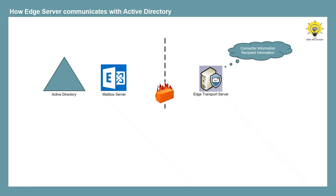For example, connector information for email flow and recipient information for anti-spam recipient lookup. This data from Active Directory is synchronized to the Edge Transport Server by the Microsoft Exchange Edge Sync service that runs on the mailbox server in Exchange 2016 or Exchange 2019. When we install Edge Transport Server, as a prerequisite, we install Active Directory Lightweight Directory Services, or ADLDS, on the machine where we want to install Edge Transport Server. Edge Sync service creates a one-way replication of recipients and configuration information from Active Directory to the ADLDS that is running on the Edge Transport Server.